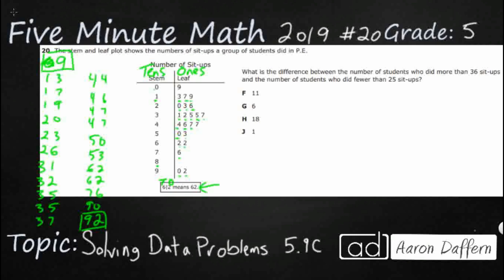Now, the question we have here is an interesting one. What is the difference? So, we have to know that means subtract between the number of students who did more than 36, so greater than 36. Now, 36 doesn't show up here. So, rather than 36 or more, they just picked a number that wasn't there, so it's not greater than or equal to. It's just greater than 36. And the number of students who did fewer than 25. And once again, 25 is actually not on the graph. But we're going to just put it there as kind of a dividing line. So, let's see if we can figure this out.